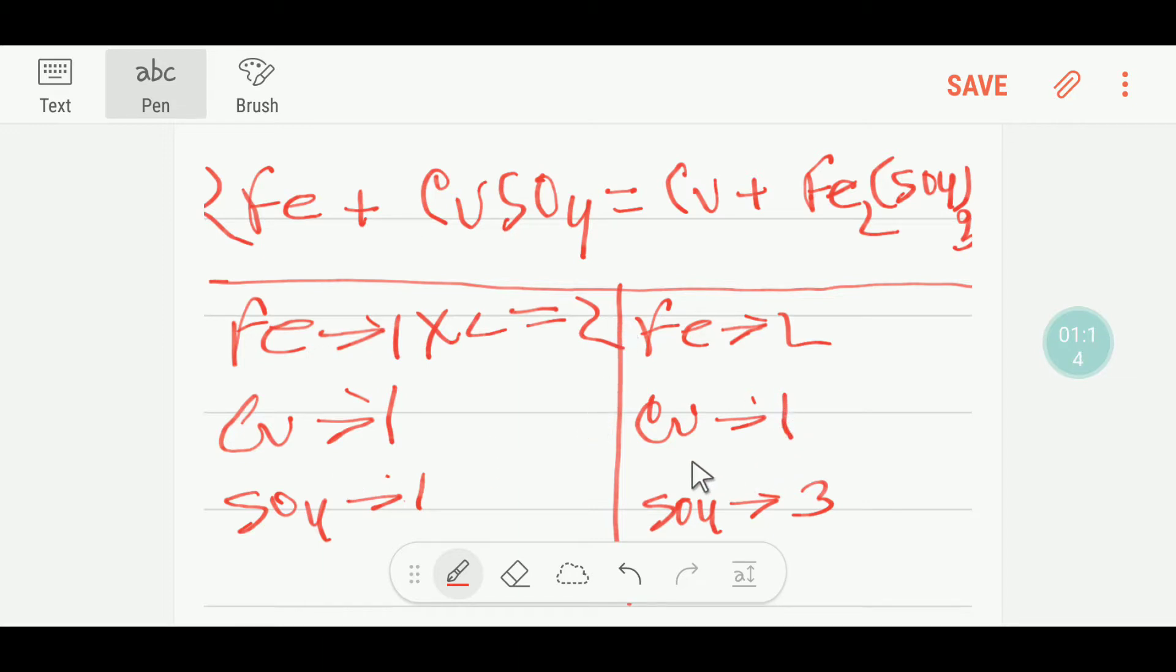Now I can balance the sulfate. Here we have three but here we have one, so to make it three I can multiply by three. This three will come before this sulfate.